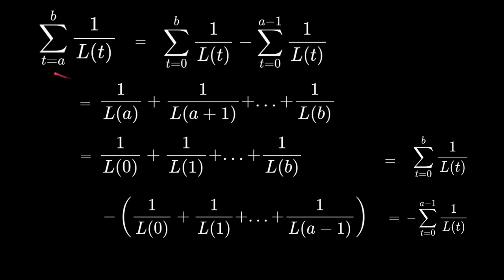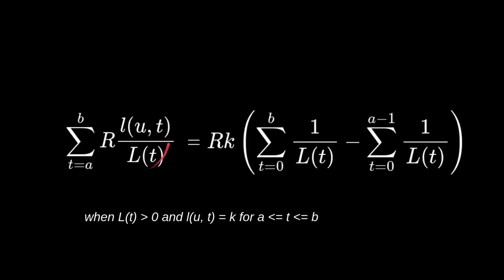Therefore, we can rewrite the top equation by plugging in this formula. We can now rewrite the equation to calculate the amount of reward that a user will receive from t equals A to t equals B, using the equation we just derived. This equation is only true when LUT is equal to a constant for the time interval between A and B.